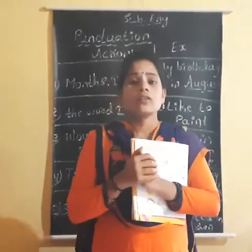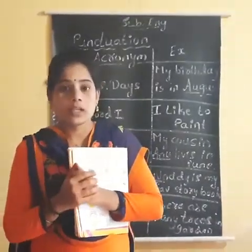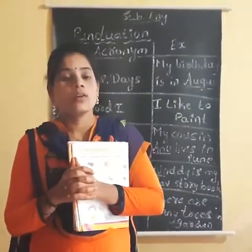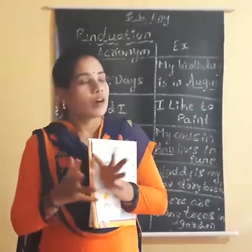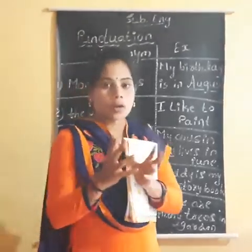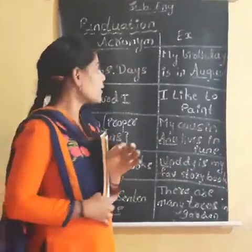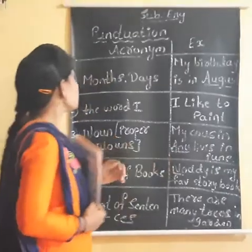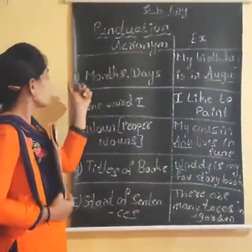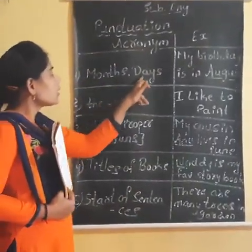Where should we start words with capital letters in a sentence? For that, some acronyms are there. Let us see them, children. The first one is months and days.